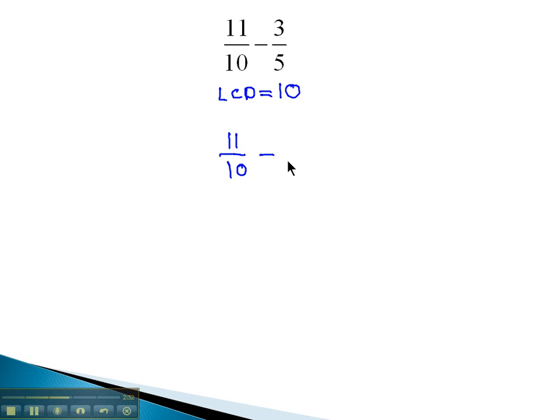The 3 fifths does not, so what we need to do is build up the 5 by multiplying it by what's missing. 5 times what will give us 10? 5 times 2 gives us 10. So we'll multiply 2, top and bottom, numerator and denominator, so we stay balanced.